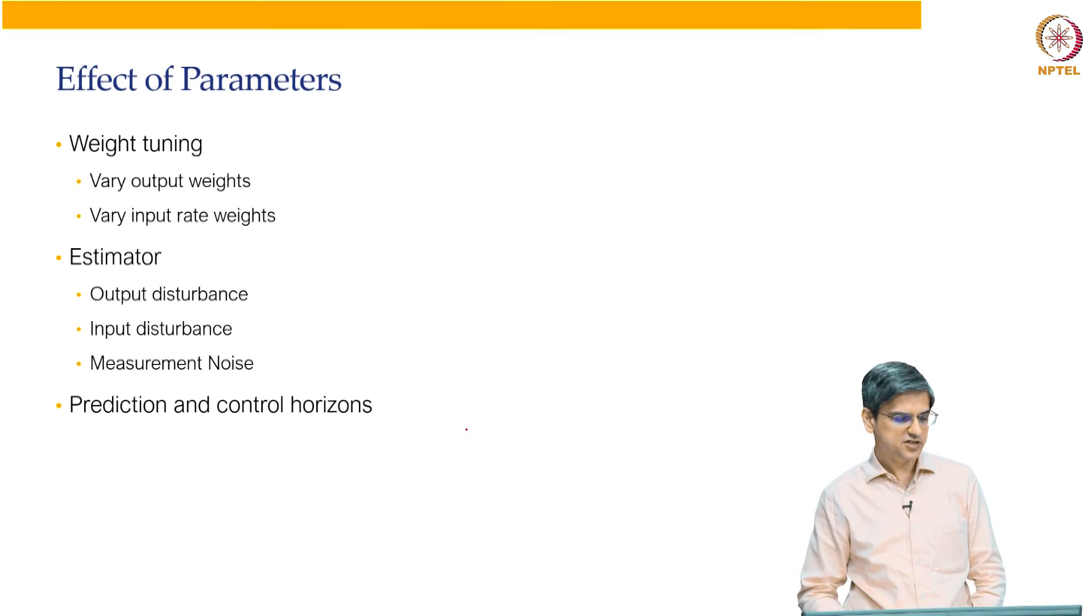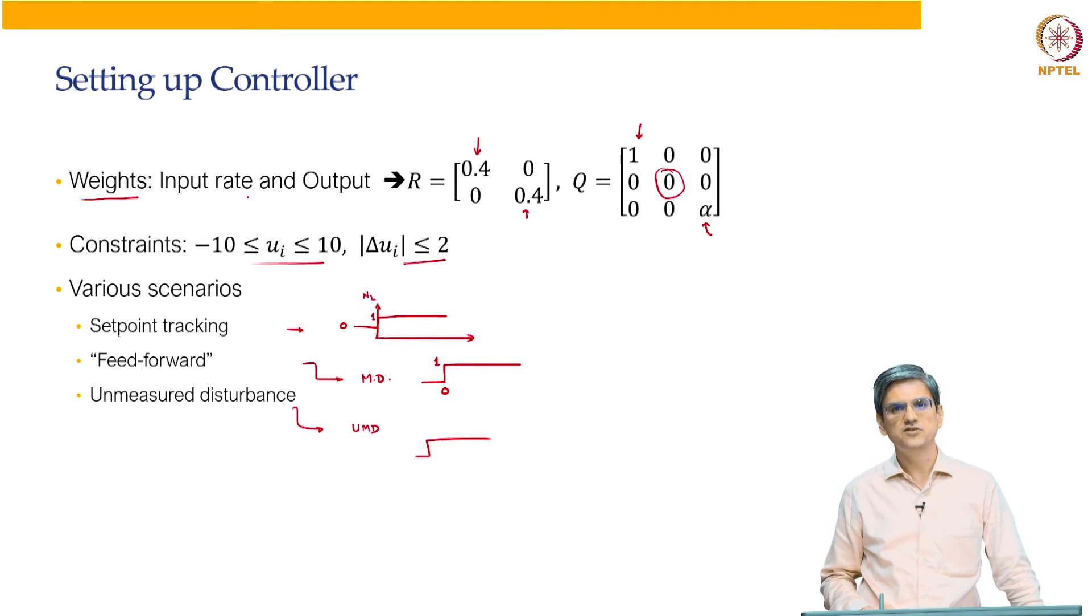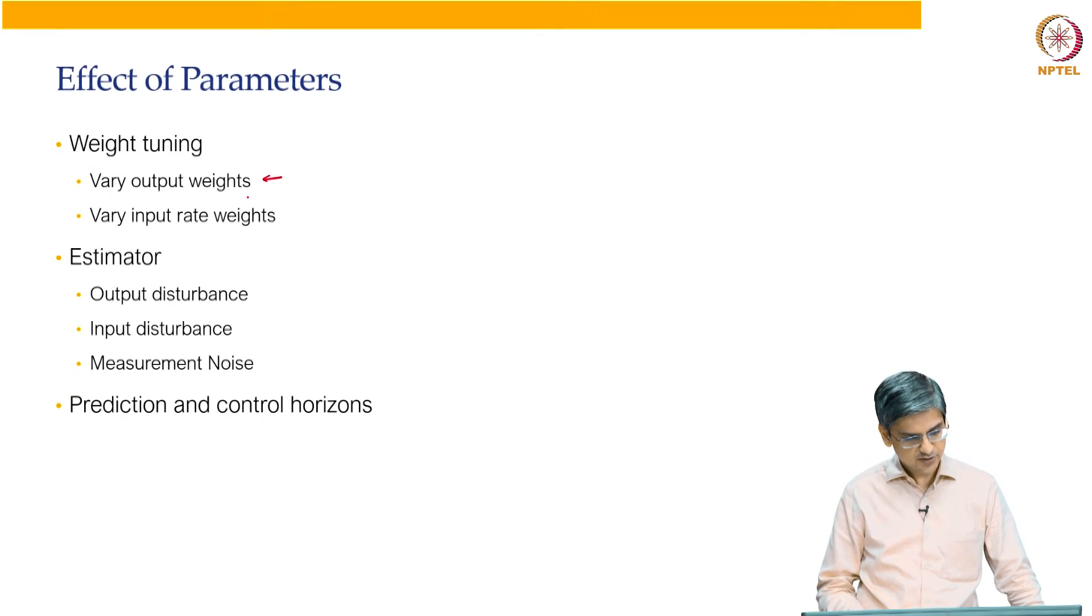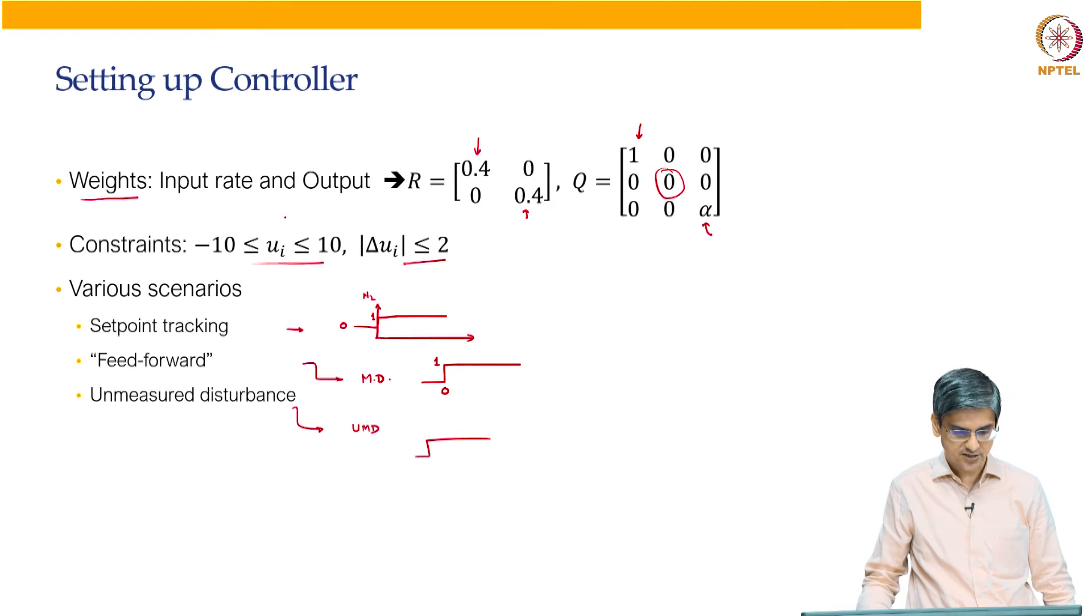And final thing that the user guide, some of it is there, some of it is not necessarily there. But the things that you can try is you try varying the output weights. So the output weights are 1, 0 and alpha. Try reducing the alpha to 0.1, 0.01 or try increasing it to 10 or 100 and see how does it overall affect. The other thing that you can do is you can keep alpha at 1 and then change the input rate. So instead of 0.4, 0.4, you can change it to 4, 4 or you can change it to 0.04, 0.04. You have already done an exercise like this earlier when we talked about LQ regulator. Long time back when we talked about DMC also, you might have done this particular experiment as well. Now you are repeating this with MPC toolbox and you can see that the qualitative results are consistent across LQR, DMC as well as state space MPC.